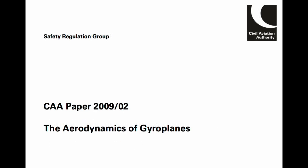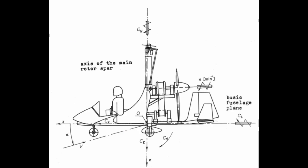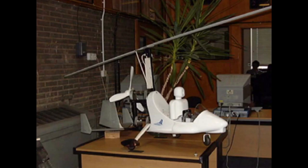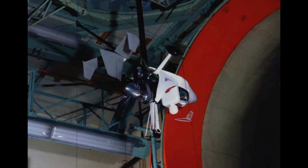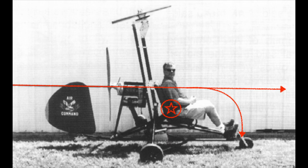BCAR Section T and the Glasgow University study are linked because the Glasgow University study didn't become one body of work until it was finally published in 2010, from the collective research undertaken by the university for the UK CAA between 1993 and 2008. This was all instigated by the 1991 UK Air Accidents Investigation Branch — the AAIB — from their investigations into Air Command accidents in the early 90s.